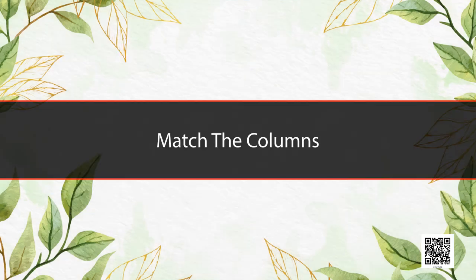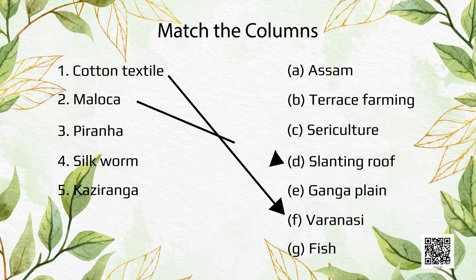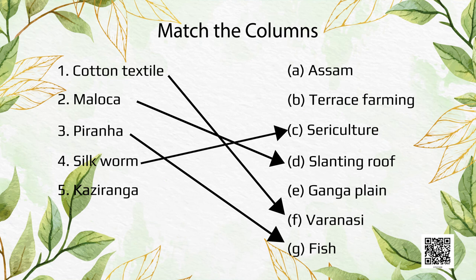Now let's match these columns. Cotton textile matches with Varanasi. Maloka means apartments with slanting roof. Piranha is a kind of fish. Silkworm rearing is called sericulture. Kaziranga is located in Assam.